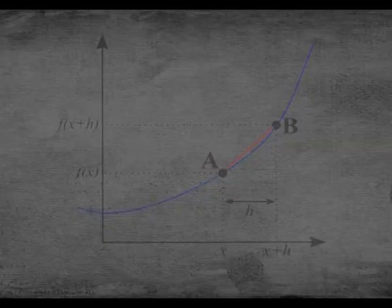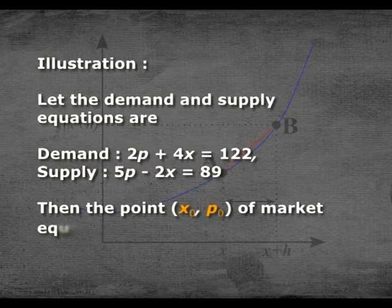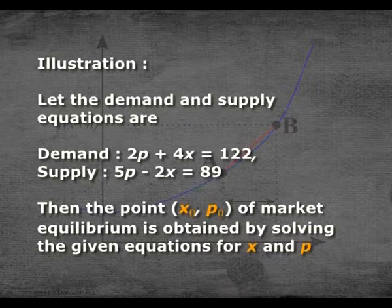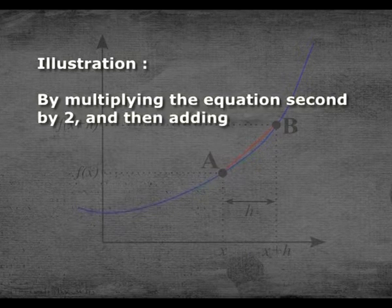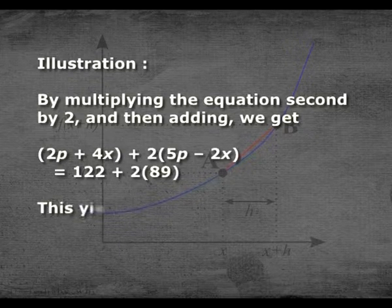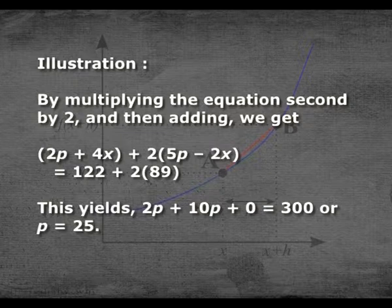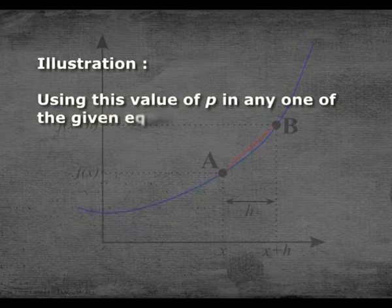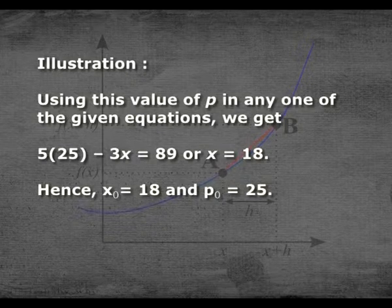Now let us see an illustration. Let the demand equation be 2P + 4X = 122 and supply equation be 5P − 2X = 89. The equilibrium point X naught and P naught is obtained by solving these equations. Multiplying the second equation by 2 and adding: 2P + 4X + 2(5P − 2X) = 122 + 2(89), yielding 12P = 300, so P = 25. Using P = 25 in the supply equation: 5(25) − 2X = 89, so X = 18. Hence X naught = 18 and P naught = 25.